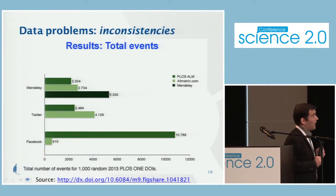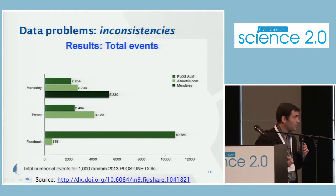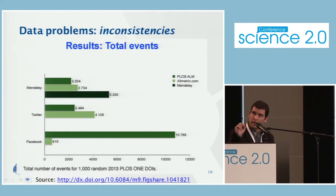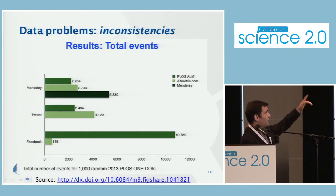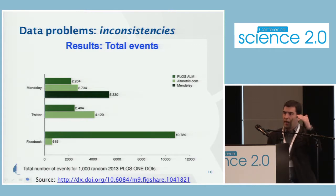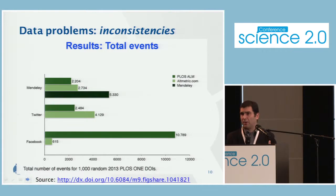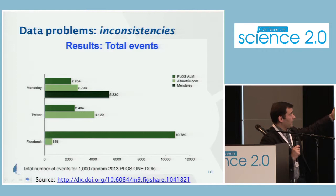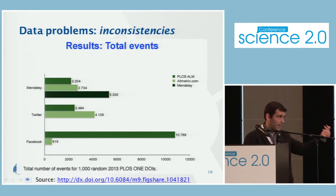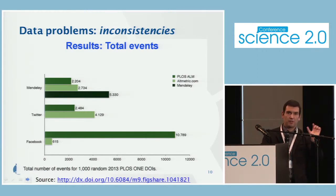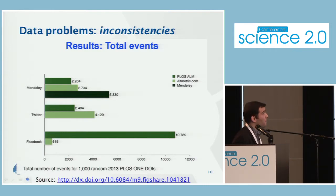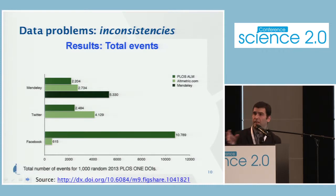An important issue is data inconsistencies. In an analysis of 1,000 random publications from PLOS One searched across different platforms — PLOS, Altmetric.com, Mendeley, Twitter, and Facebook — we found differences in counts that couldn't always be explained. For example, Facebook counts in PLOS and Altmetric.com are very different: PLOS counts actions like likes and shares, while Altmetric.com counts only posts. This is an important element to keep in mind when working with Altmetrics.